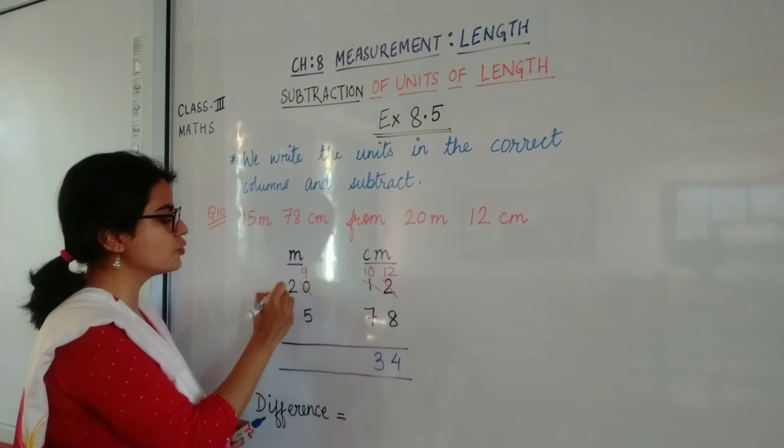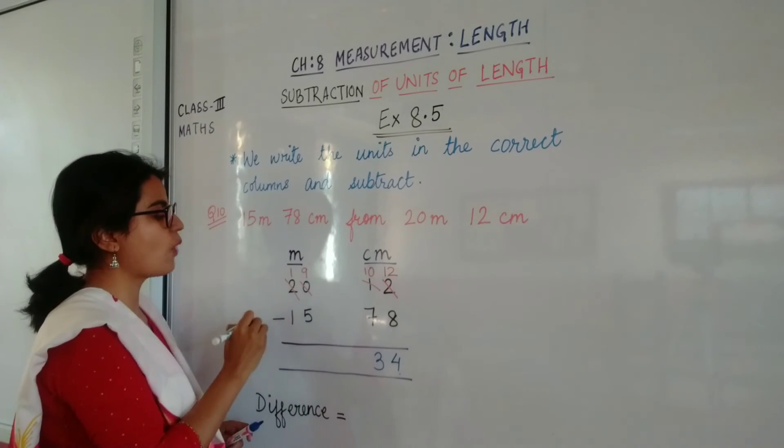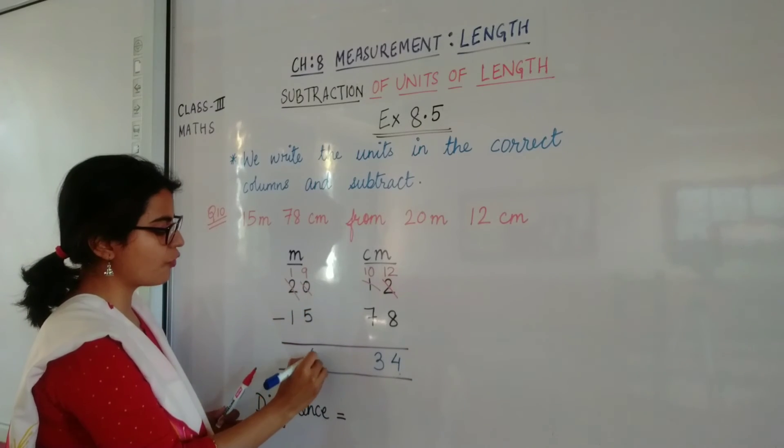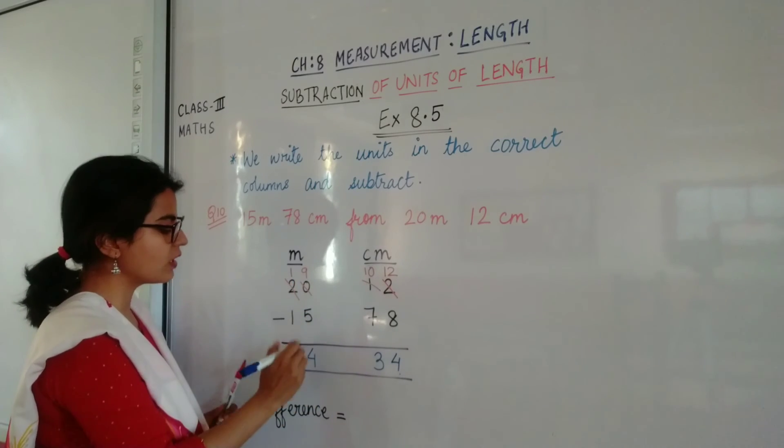So 2 becomes 1. Okay, now 9 minus 5 is 4, 1 minus 1 is 0.